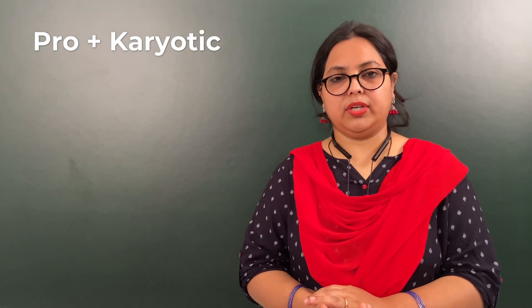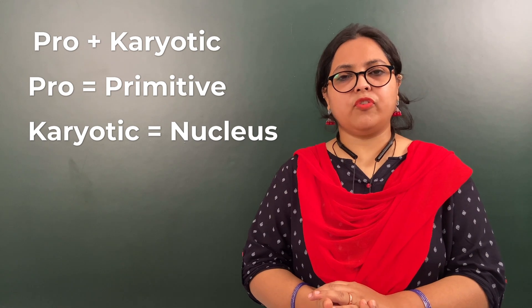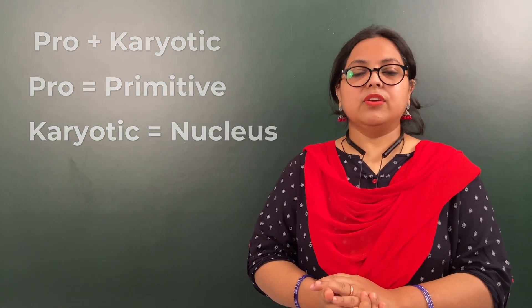Hello friends, today we are going to discuss about the prokaryotic cell. The word prokaryotic is made up of two words: 'pro' and 'karyotic'. Pro stands for primitive, and karyotic is originated from 'karyon' which means nucleus. So it means it has a primitive kind of nucleus — the nucleus is not well developed and it is not a true nucleus.